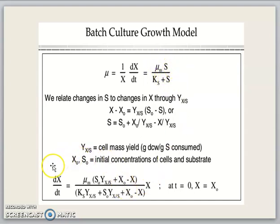Later, you will get the below equation here: dX/dt equals mu_m times (S_0 Y_X/S plus X_0 minus X) over (Ks Y_X/S plus S_0 Y_X/S plus X_0 minus X) times X, where at t equals 0, X is equivalent to X_0.